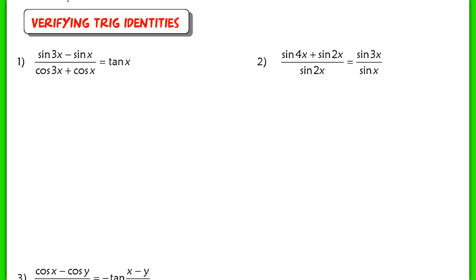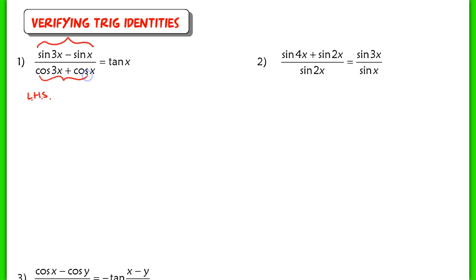Let's get started on our first identity. On the left-hand side, this is definitely more complex than the right. On the right-hand side, if you try to do anything with it, all you can do is write it in terms of sine and cosine and you get stuck. So we're going to focus on the left-hand side. In the numerator, I have a difference of two sine functions, so I'm going to try to change that into a product and do the same thing in the denominator. Let's focus on sine 3x minus sine x.